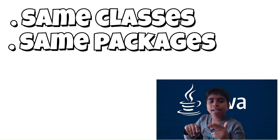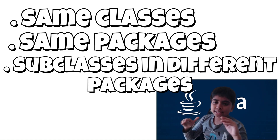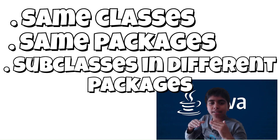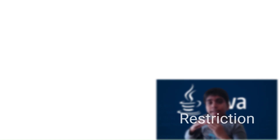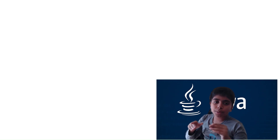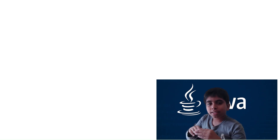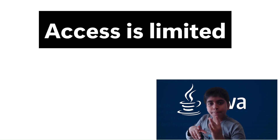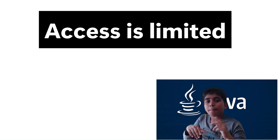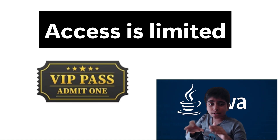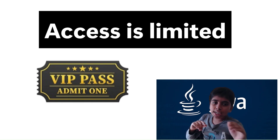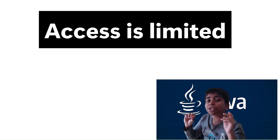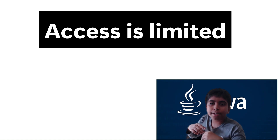Public is accessed from everywhere — same class, same package, subclasses in different packages, and any random class in a different package. Basically if it's public, there are no restrictions at all; any code in your project can access it. But protected is not the same — access is limited to the same class, the same package, and subclasses only. Outsiders in different packages who are not subclasses cannot come in.